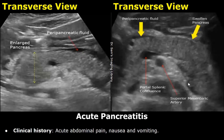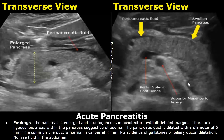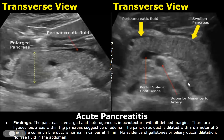The first case is acute pancreatitis. The clinical history in this example is acute abdominal pain, nausea, and vomiting. In the findings, you can write: the pancreas is enlarged and heterogeneous in echotexture with ill-defined margins. There are hypoechoic areas within the pancreas suggestive of edema.